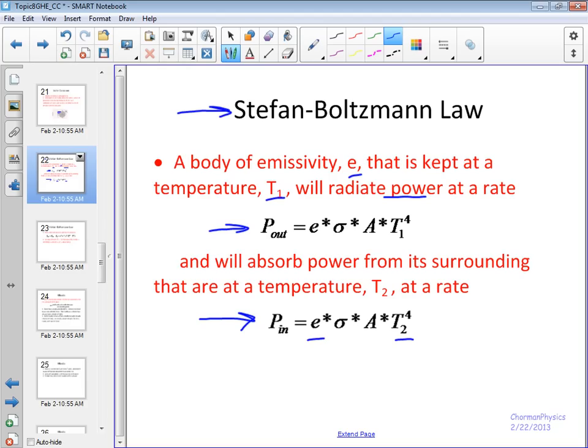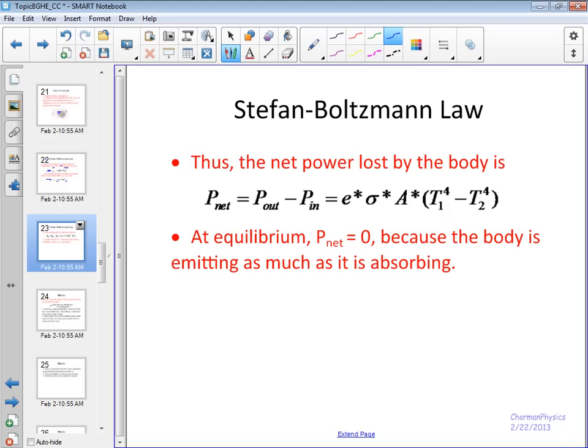The emissivity correlates to both what can be absorbed and what can be radiated by that object. So we combine this, and what we find is the net power that is either being lost or absorbed is P_out minus P_in. The equilibrium condition is that the net power being lost is equal to zero. Here we have an object that's emitting as much as it is absorbing.